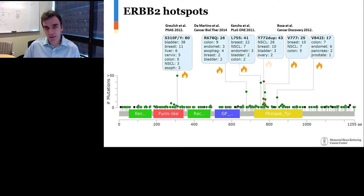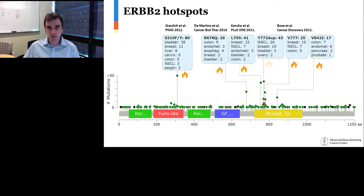Going back to ERBB2: when they first ran this on 10,000 tumors, they found six missense hotspots. S310 was the most frequent, more common in bladder cancer with 38 occurrences. R678Q was found in nine colon samples and other types. L755 seemed more breast-specific with 22 mutations. A duplication of Y772 appears non-small cell lung cancer specific. Two other mutations in the kinase domain are breast- or colon-enriched. The nice thing is that all of these hotspots were eventually validated through functional experiments, with papers describing their effects and sometimes therapeutic implications.